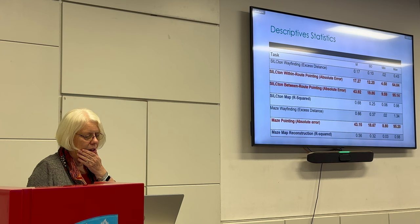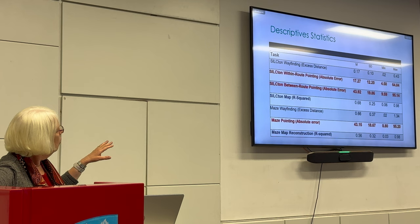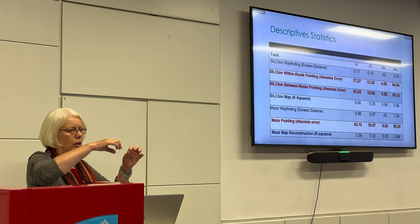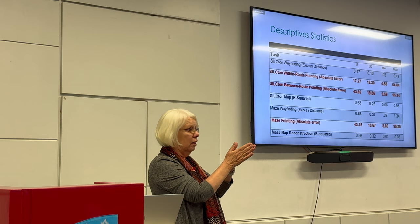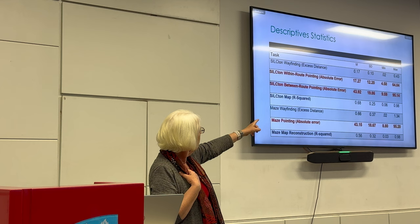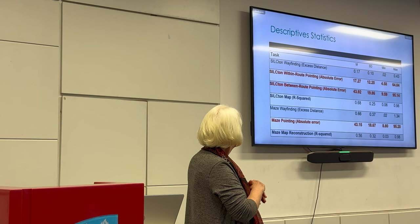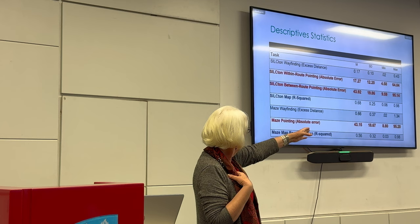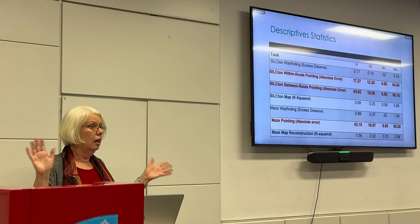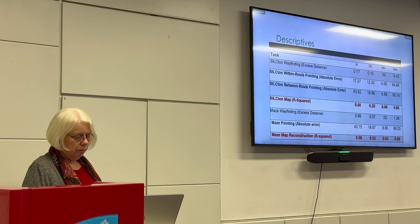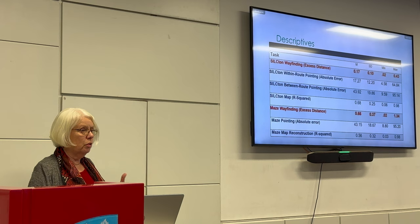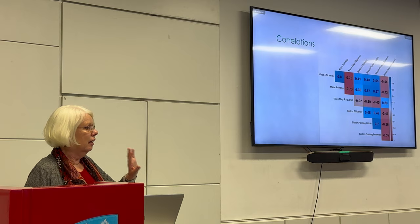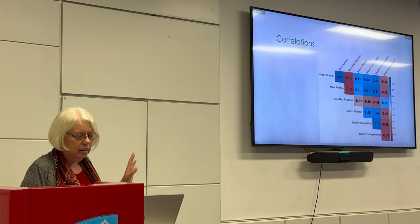To show the variability: for pointing in the Silton environment, perfect performance is zero degrees of error. Some people were only about four degrees off on average, while others were 64 degrees off. For the maze, people ranged from eight degrees to around 95 degrees off — 90 degrees is chance performance. Similarly there was a lot of variability in map reconstruction, while wayfinding in the more open campus environment was actually very good, but there was still some variance.